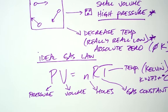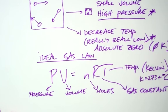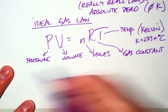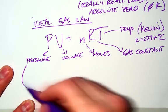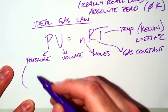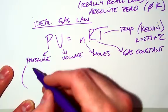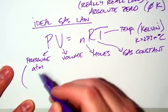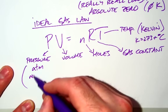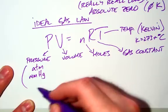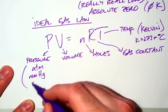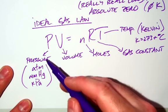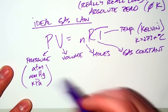A couple things real important about the ideal gas law are the units. Pressure units can be three different units. You definitely need to pay attention to it. Our pressure units can be atmospheres, millimeters of mercury, and kilopascals. We definitely have to pay attention to this. The unit of pressure will determine which gas constant we use.